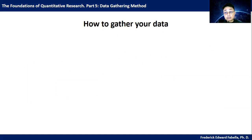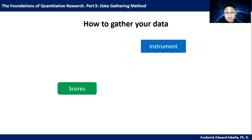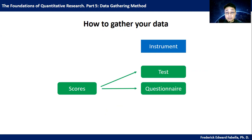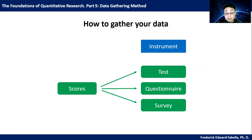Let's consider first scores. To obtain scores, you first need an instrument — a valid and reliable instrument to obtain the scores. So if you are studying people, for example, you might want to give them a test, or you might want to give them a questionnaire, or you might conduct a survey. All of these instruments will yield scores that you might need in your study.